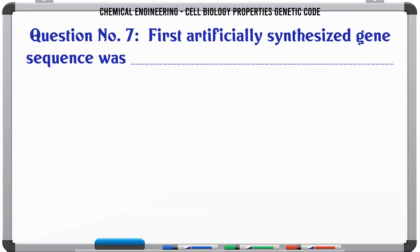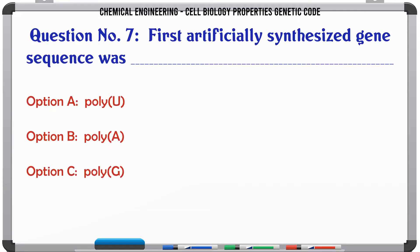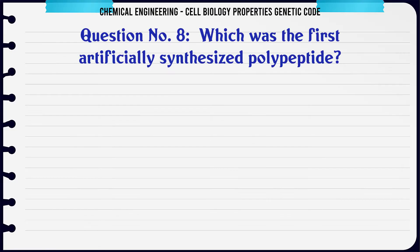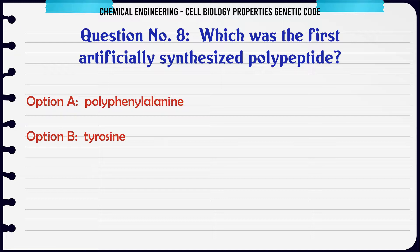First artificially synthesized gene sequence was A) Poly-U, B) Poly-A, C) Poly-G, D) Poly-C. The correct answer is Poly-U.